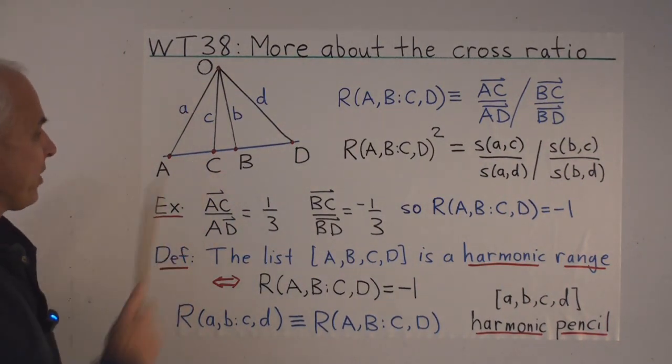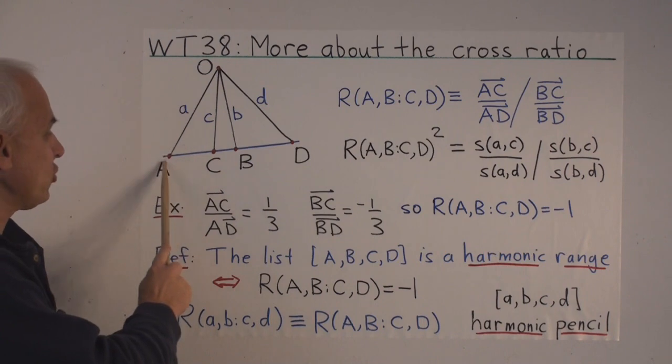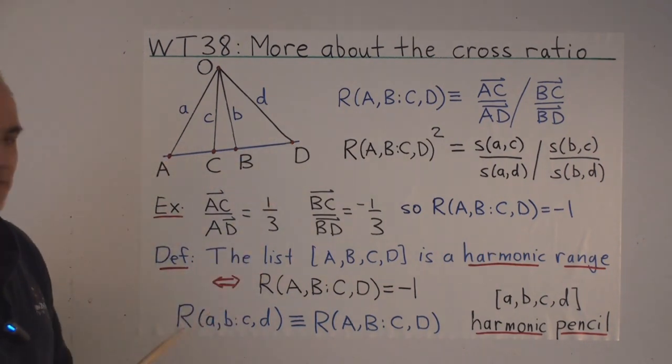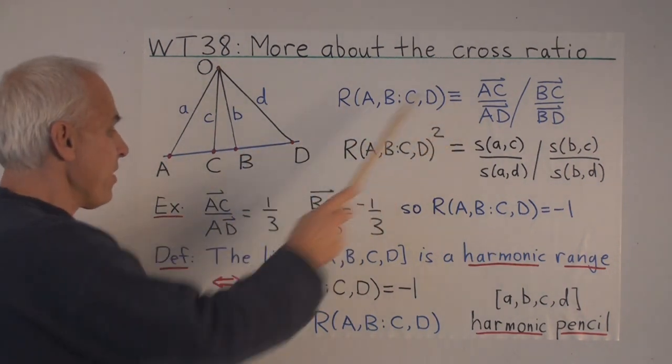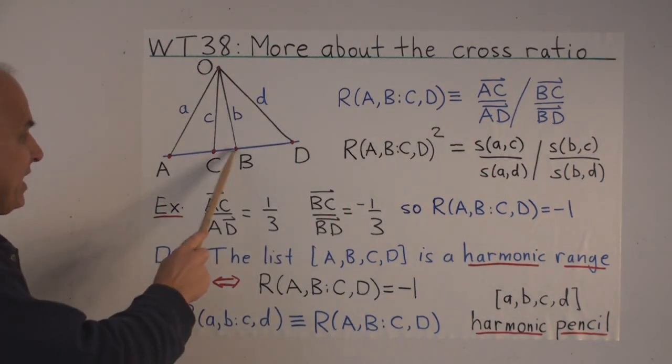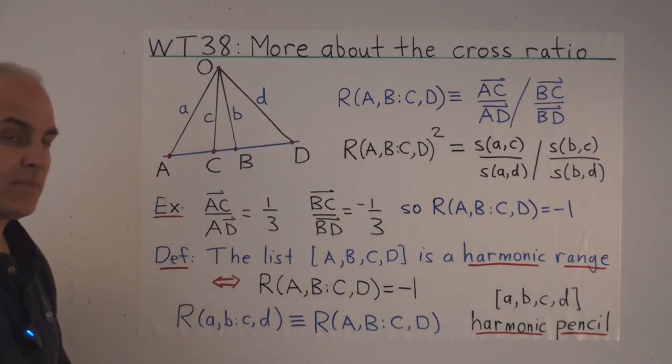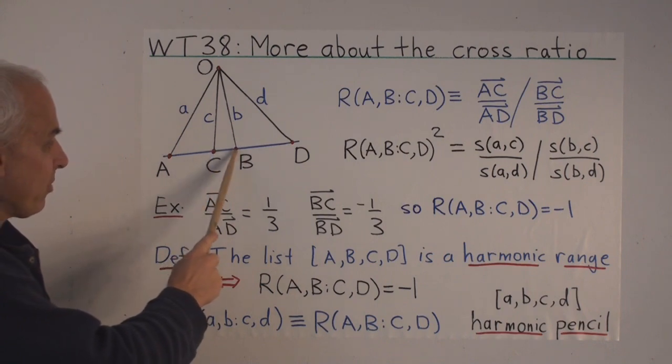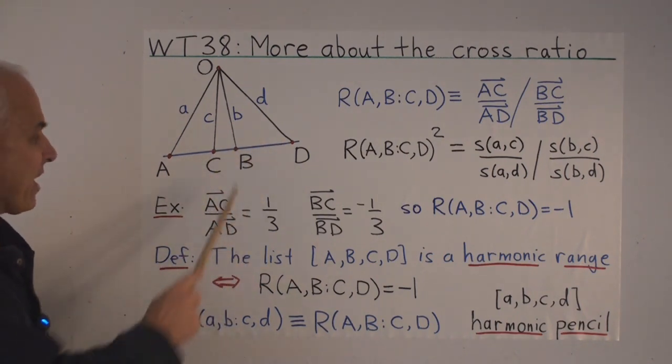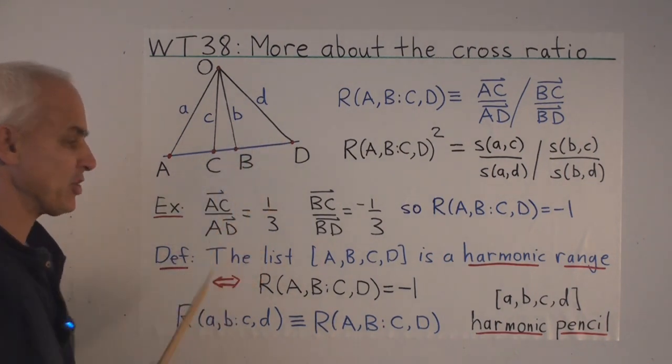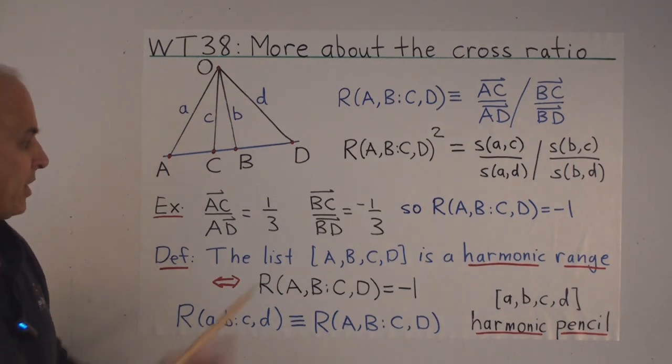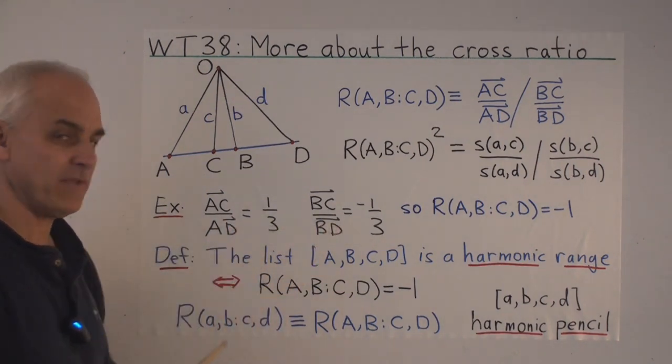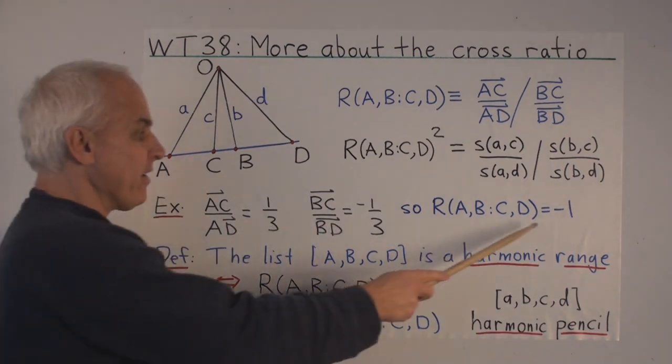In this example here, AC to AD is roughly one to three, so that first ratio would be one-third. While BC to BD is in this case also one-third, but it's a minus one-third because BC is in the opposite direction to BD. So in this case the ratio of these two ratios is minus one.